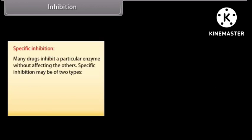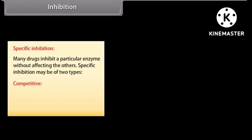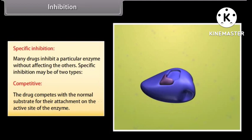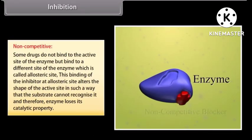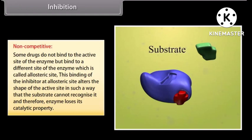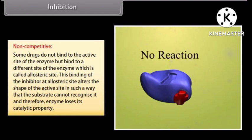Many drugs inhibit a particular enzyme without affecting others. Specific inhibition may be of two types. Competitive: the drug competes with the normal substrate for attachment on the active site of the enzyme. Non-competitive: some drugs do not bind to the active site of the enzyme but bind to a different site called the allosteric site. This binding at the allosteric site alters the shape of the active site in such a way that the substrate cannot recognize it, and therefore the enzyme loses its catalytic property.